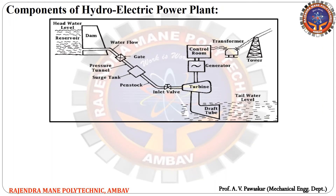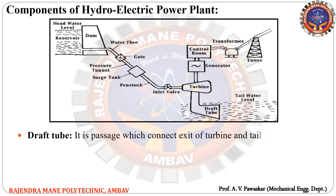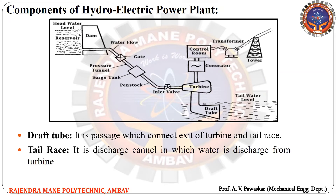The last two components are the draft tube and tailrace. The draft tube is a passage which connects the exit of the turbine to the tailrace. The tailrace is the discharge canal in which water is discharged from the turbine.